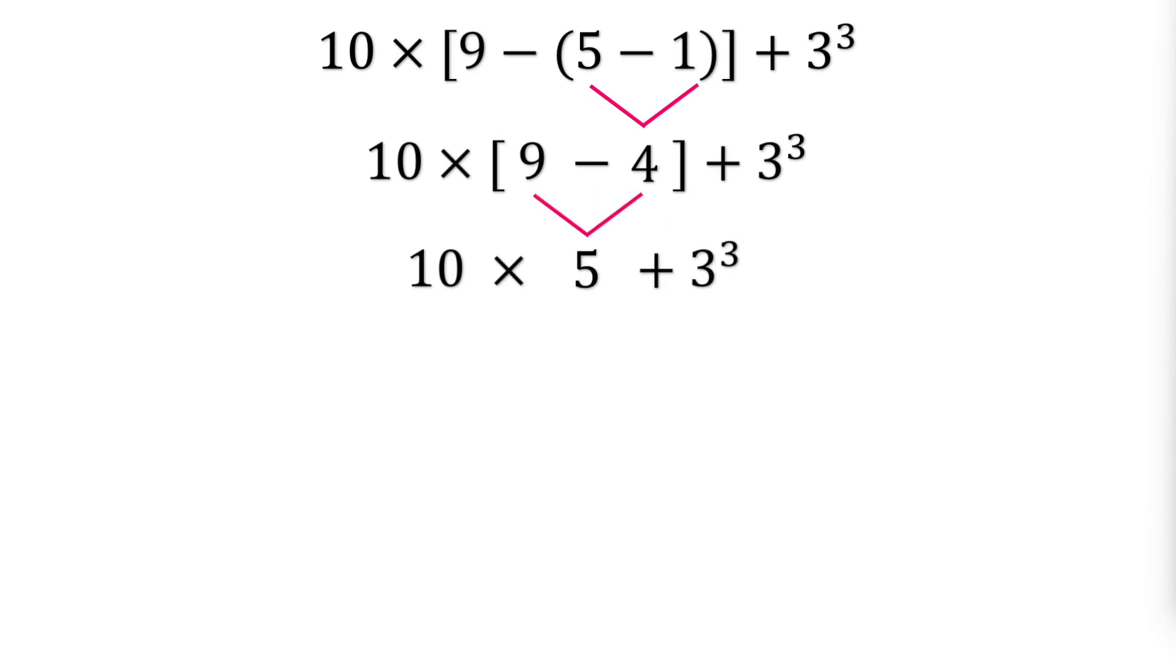You have exponents next. So find the value of 3 cubed, which is 3 times 3 times 3, resulting in 27. Now multiply 10 and 5, which gives you 50. Finally, add 50 and 27 together. And the correct final answer is 77.